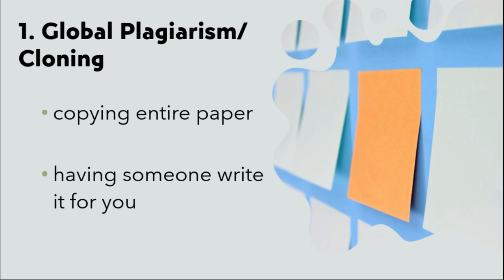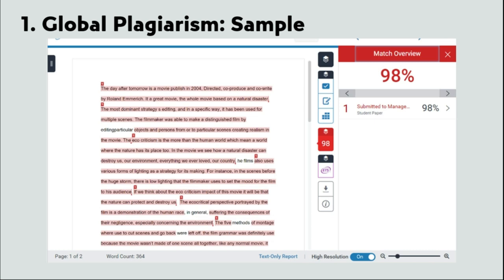One type of plagiarism is global plagiarism, or what other people also call cloning. This consists in copying the entire paper or having someone else write that paper for you. In this example, you can see that the student has chosen to take another paper and just change the name of the previous author with his or her name, as Turnitin shows 98% similarity, which is, in fact, plagiarism.